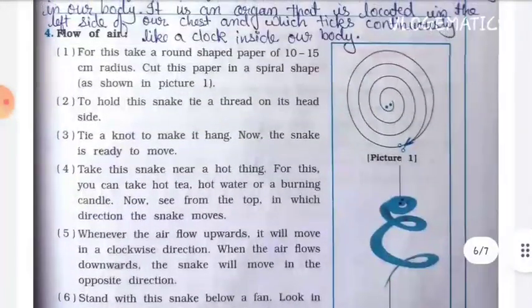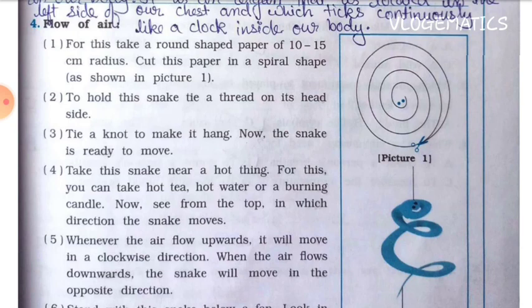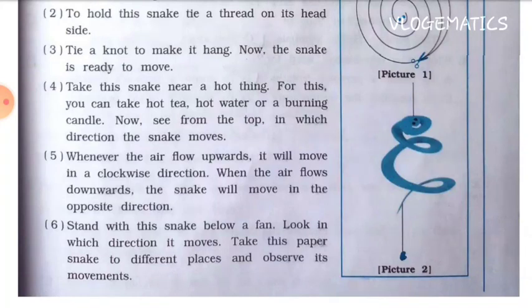Activity — Flow of Air: Take a round piece of paper with a 10 to 15 centimeter radius. Cut it in a spiral shape. Tie a thread on its head side to hold the snake, then tie a knot to make it hang. The snake is now ready to move. Take it near a hot thing — hot tea, hot water, or a burning candle — and observe from the top which direction the snake moves. When air flows upward, it will move in a clockwise direction.